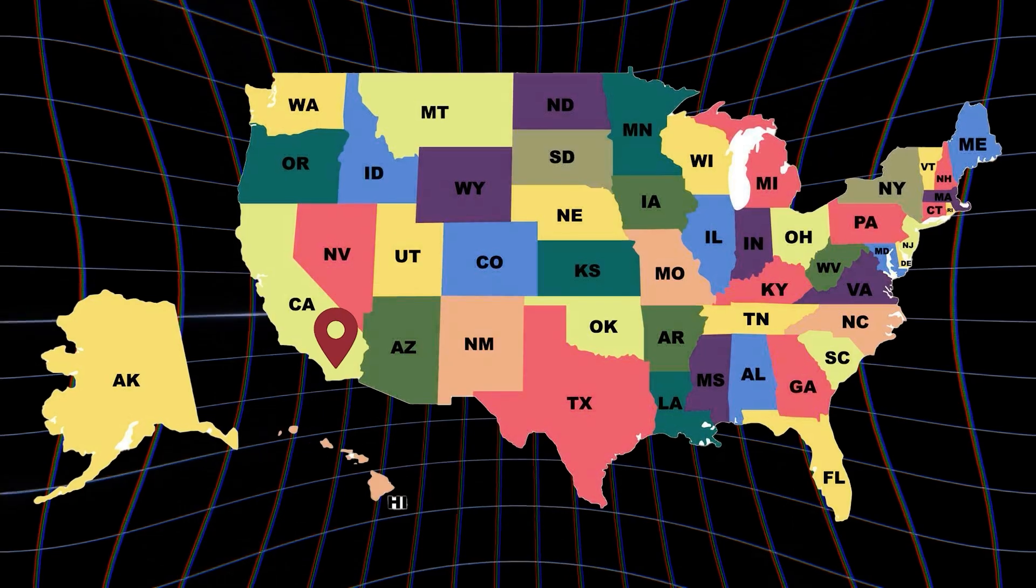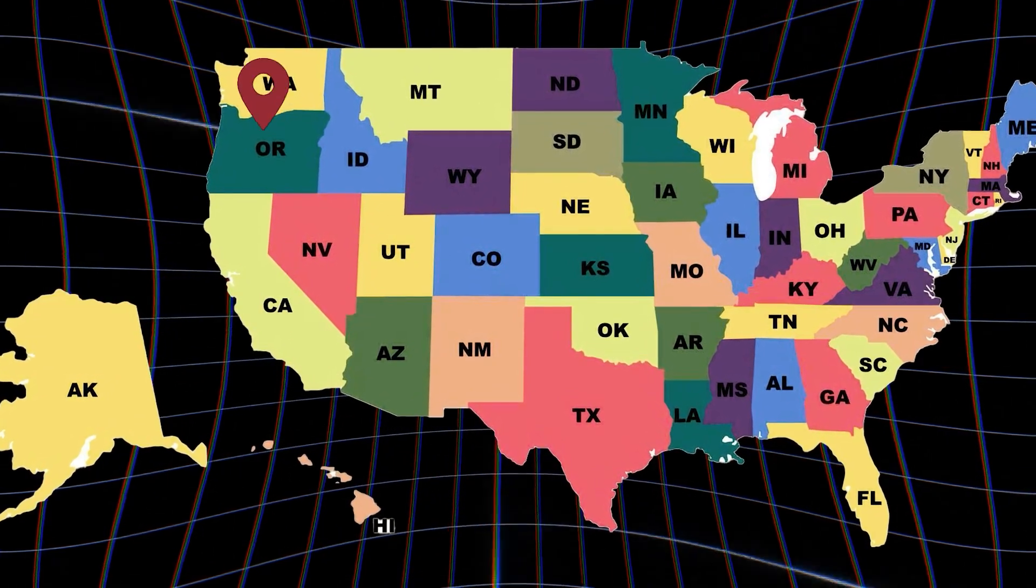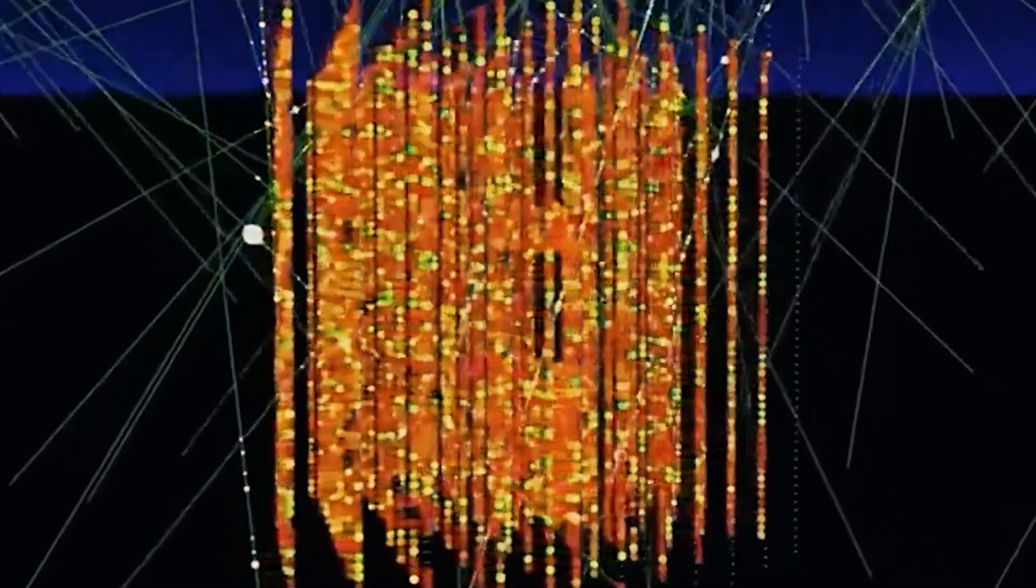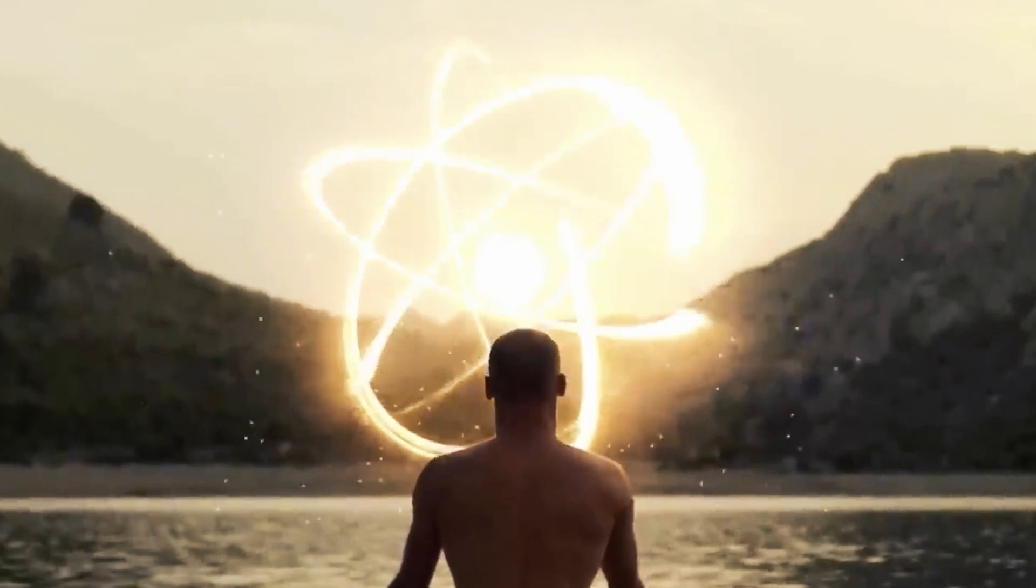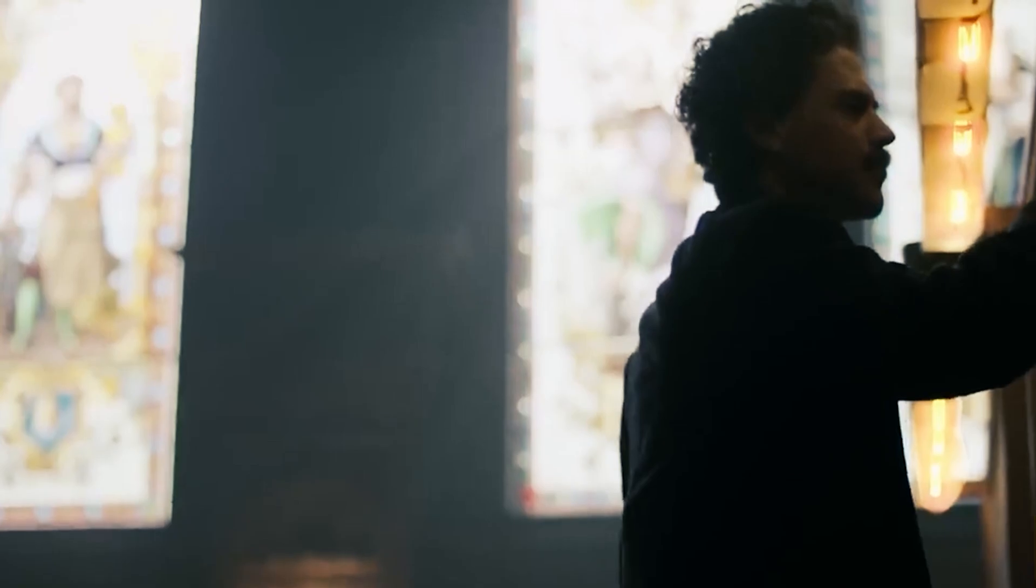This is very important. Imagine a particle traveling halfway across the country, say from California to Washington. As soon as you observe one, you know immediately the state of its entangled partner. This phenomenon is called quantum entanglement, and it absolutely terrified Einstein. What terrified him most was that if the particles were separated far enough apart, information about one could be transmitted to the other faster than the speed of light. Einstein called this spooky action at a distance, and he spent years trying to prove that there was a hidden law in the universe that prevented this from happening.